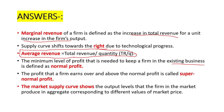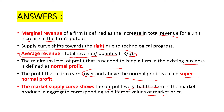What is supernormal profit? The profit that a firm earns over and above the normal profit is called supernormal profit. Last question: what does the market supply curve show? The market supply curve shows the output levels that the firms in the market produce in aggregate, corresponding to different values of market price.